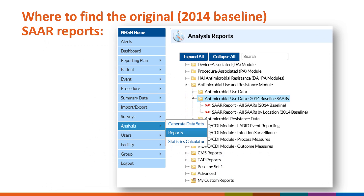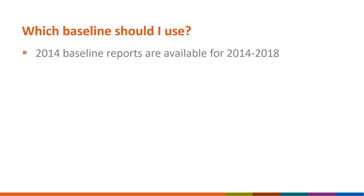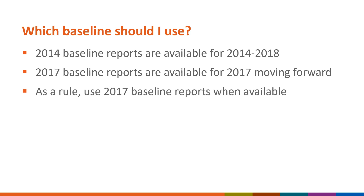If you're interested in SAR reports calculated using the original 2014 baseline, navigate to analysis on the left-hand navigation bar and select reports. Select the antimicrobial use and resistance module folder and navigate to the antimicrobial use data 2014 baseline SARs folder to access 2014 baseline SAR reports. The first consideration when choosing a baseline is the time period of interest. 2014 baseline reports are available for 2014–2018 data, and 2017 baseline reports are available for 2017 data moving forward. In general, we recommend using the 2017 baseline SAR reports when available because of their increased precision, updated drug categories, and additional locations.